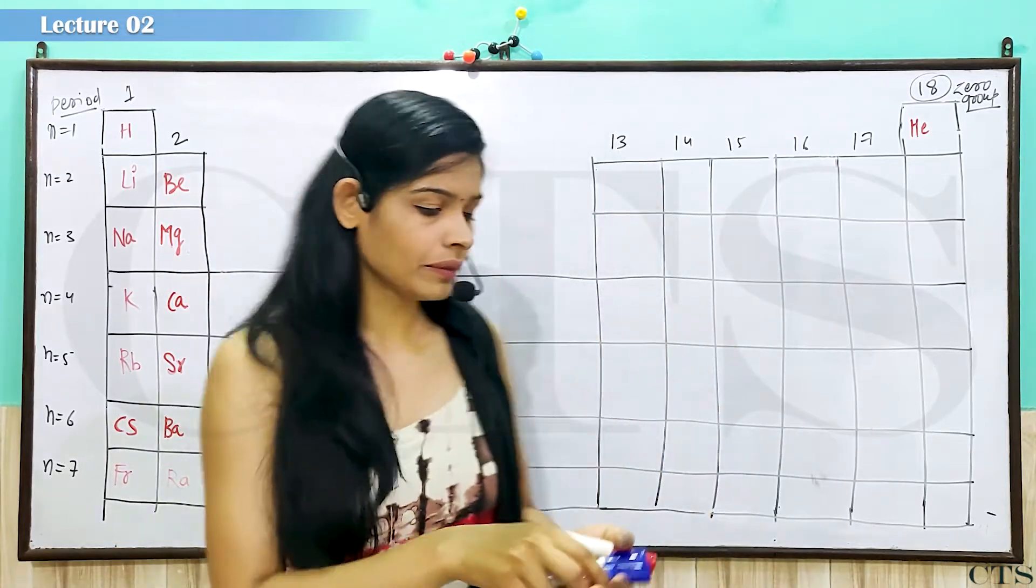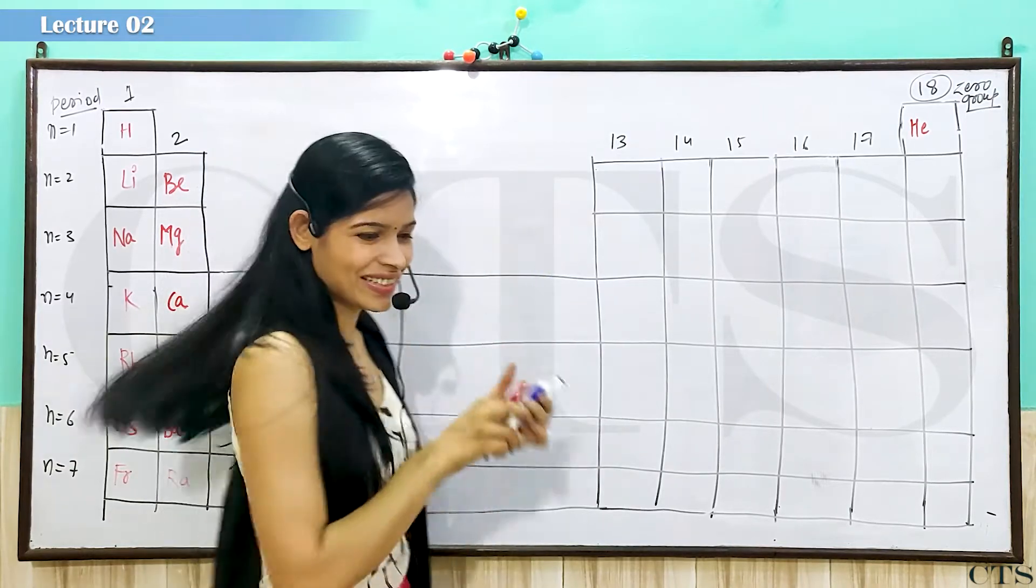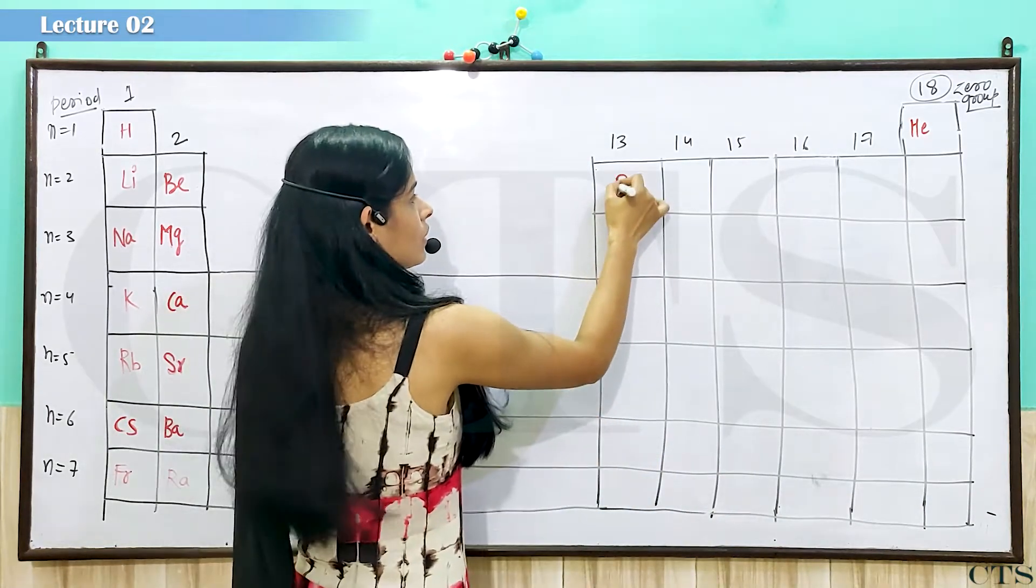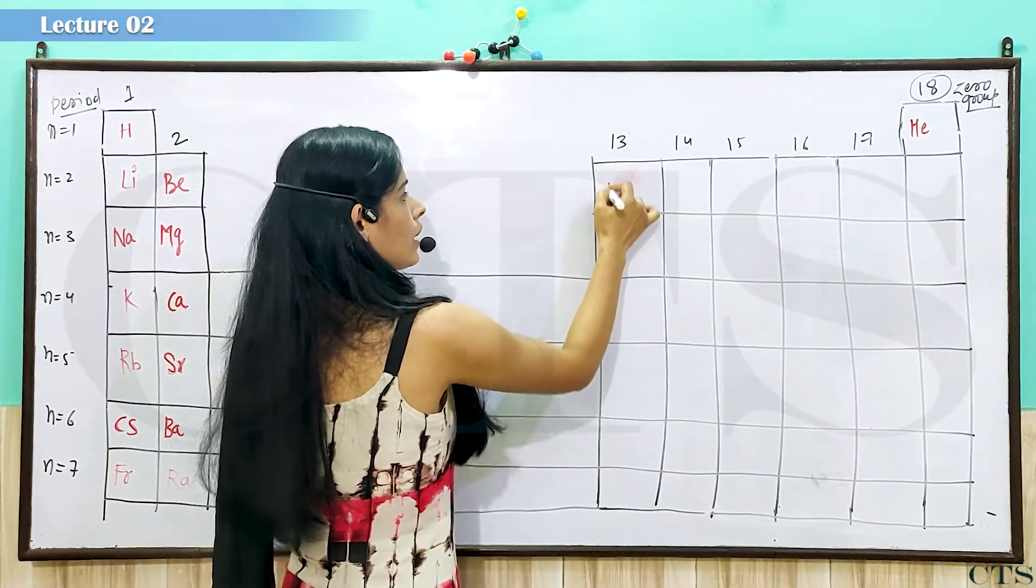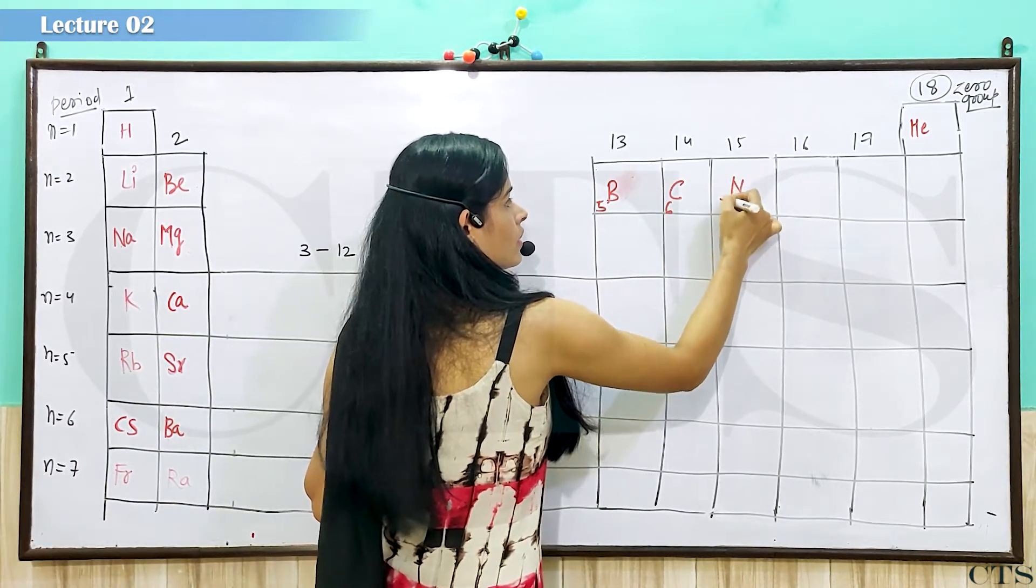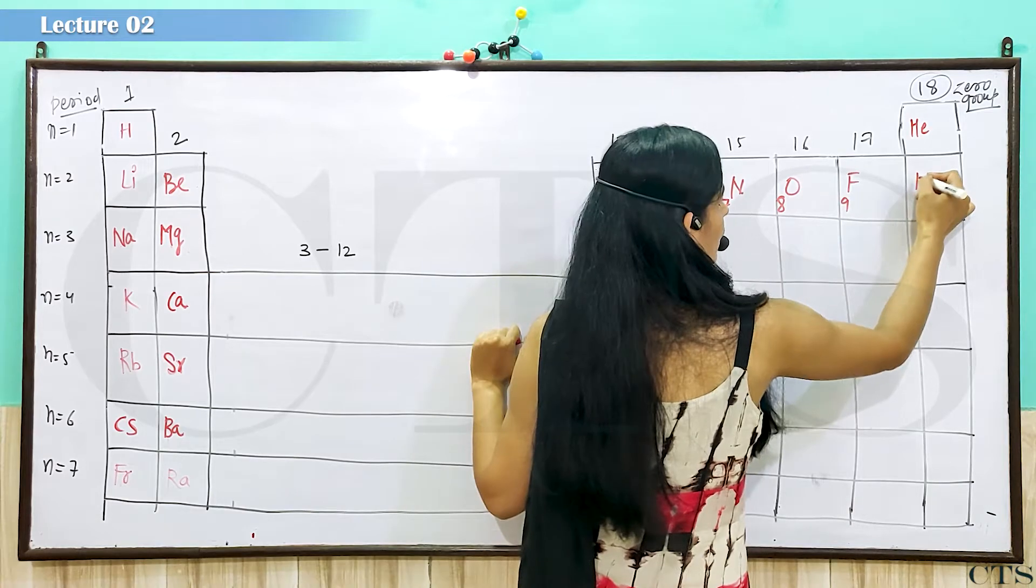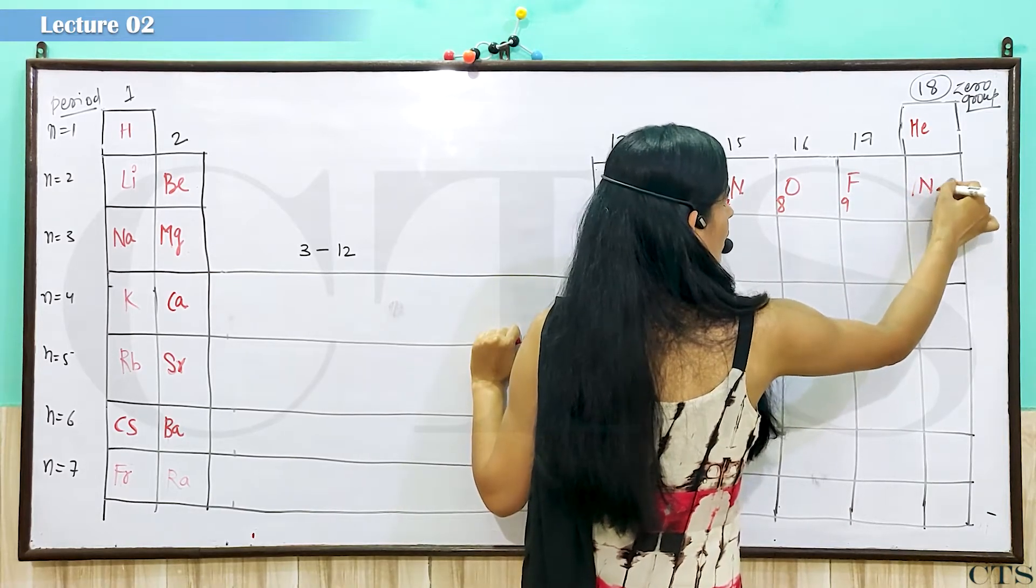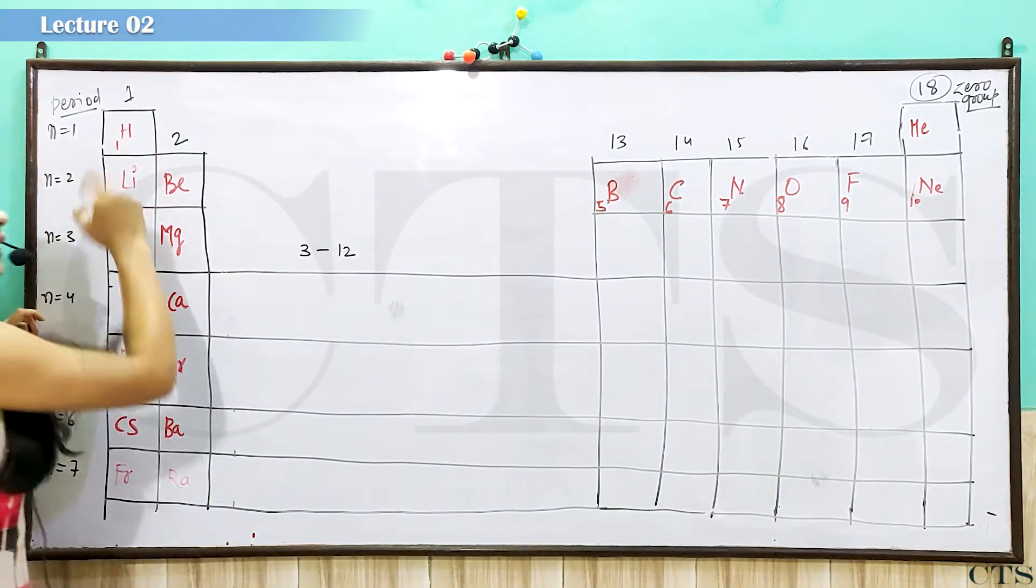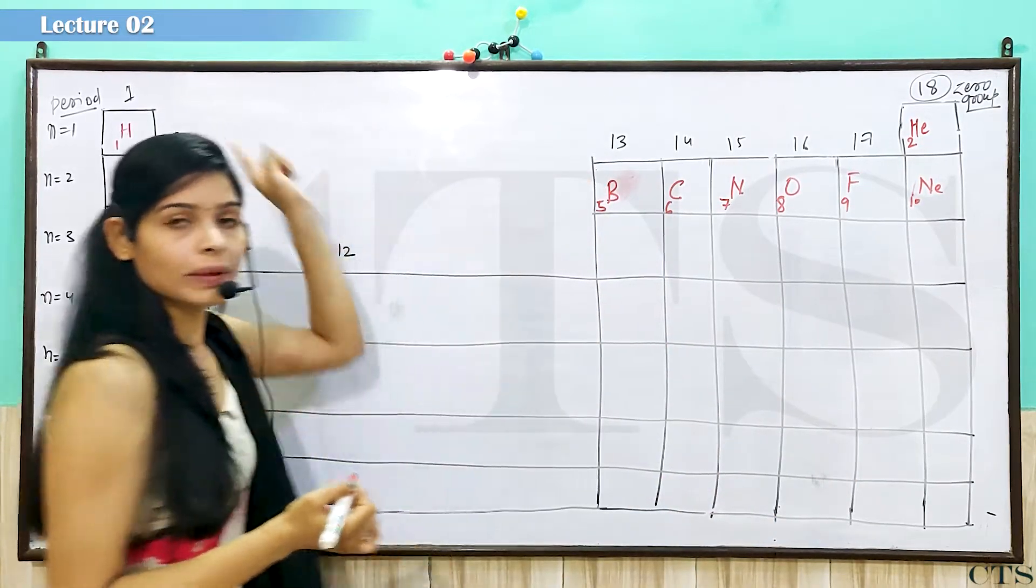Dhekhye beta ji, yahaan par yah hai hydrogen, lithium, sodium, potassium, rubidium, cesium, francium. And this is beryllium, magnesium, calcium, strontium, barium, and radium. Radium waala yad hai na, madame curie ki death hoi thi radium ki wajah se, because radium is radioactive.